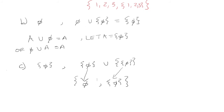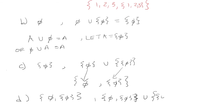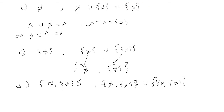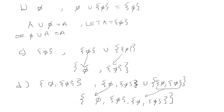Last one: we have the successor of the set that contains the empty set and the set that contains the empty set. For that, you're just going to take that original set and do the union of the set of the same set. We're just going to take each element at a time: the empty set, the set that contains the empty set, and then this whole thing. So that is our answer.